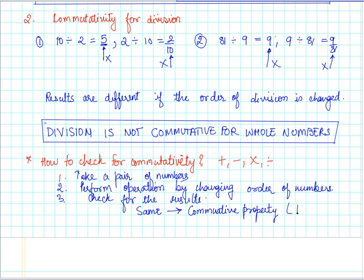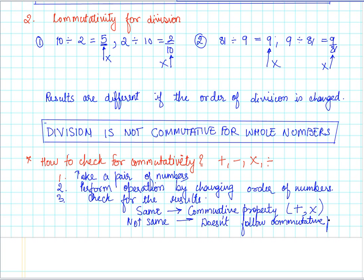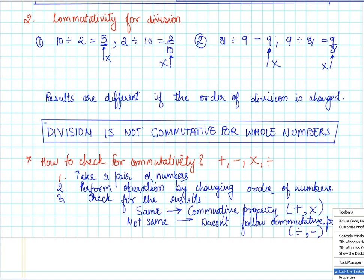We conclude that multiplication and addition follow the commutative property. If the results are not the same, then the operation does not follow the commutative property. We also proved that division and subtraction do not follow the commutative property. That was our final discussion on commutativity. See you in the next session. Bye.